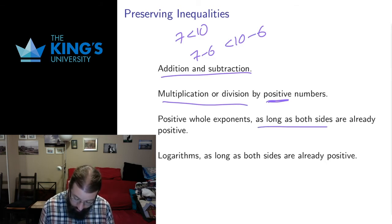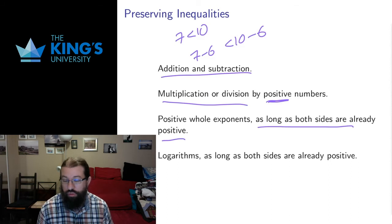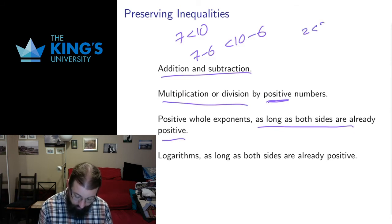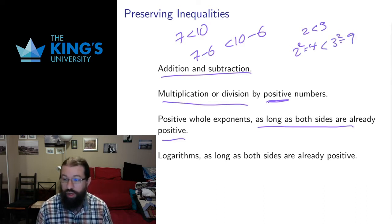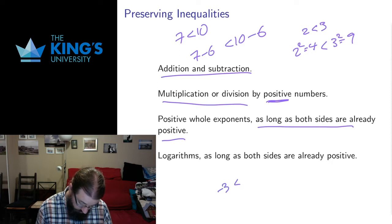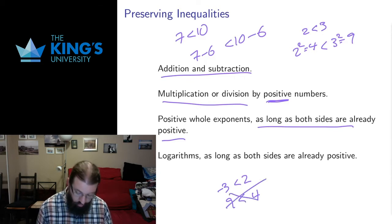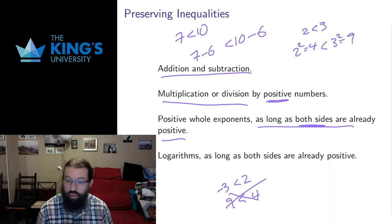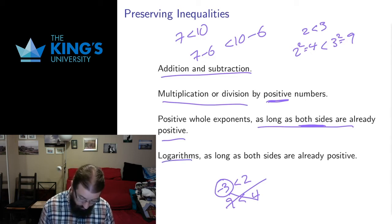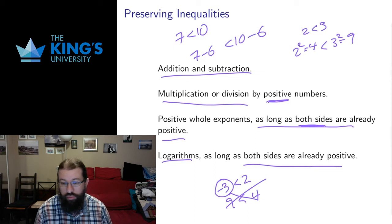So multiplication and division of both sides only by positive numbers. We can take positive whole exponents. This one also has a condition, not on the exponent, but on the inequality, as long as both sides are already positive. So if I have 2 is less than 3, I can take 2 squared is 4, is less than 3 squared is 9, that works. I can square both sides of that inequality. But if I had instead negative 3 is less than 2, and I square both sides of that, negative 3 squared is 9, 2 squared is 4, I put a less than sign there, that's no longer true, that doesn't work. So both sides of the inequality have to be positive. If one side is negative, like this negative 3, then squaring or other positive whole exponents don't work. And for similar kinds of reasons, logarithms have the same rule. Both sides have to be already positive, and then a logarithm will work.